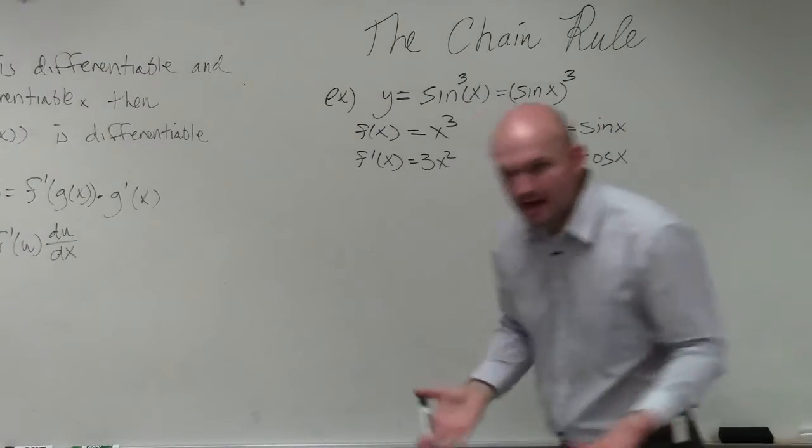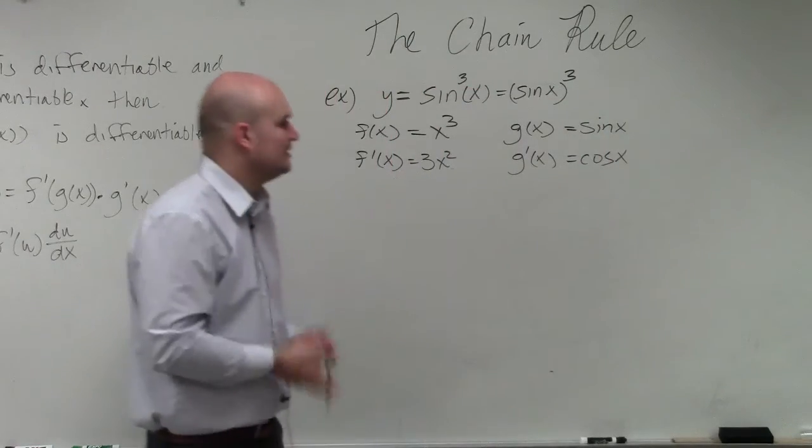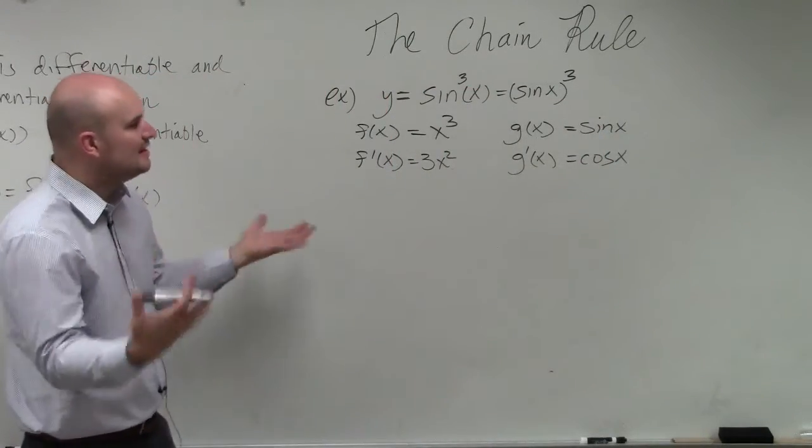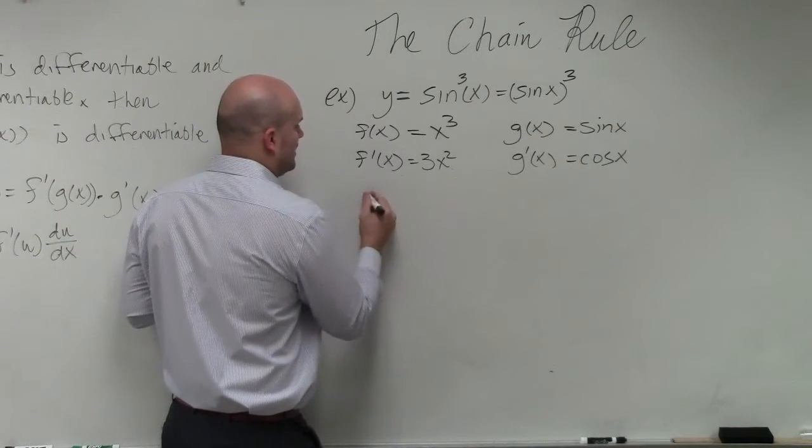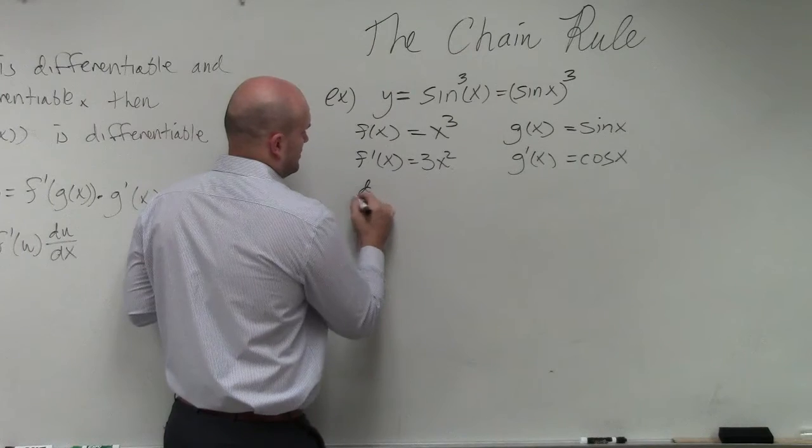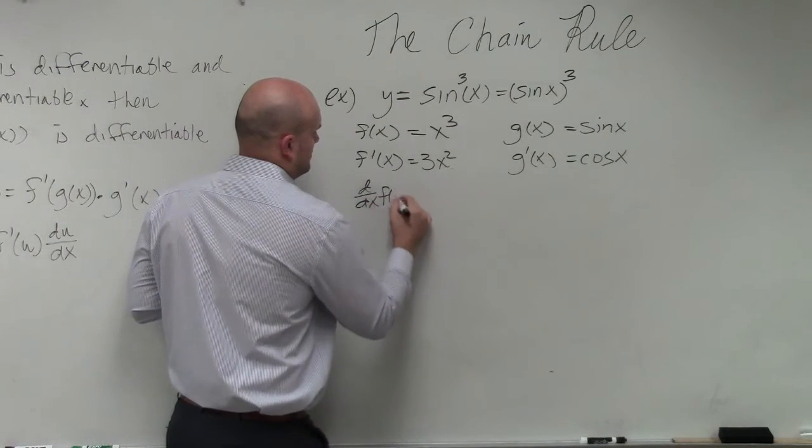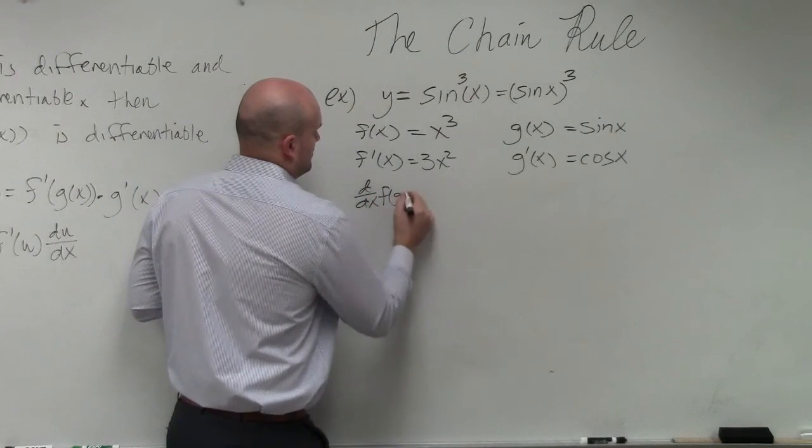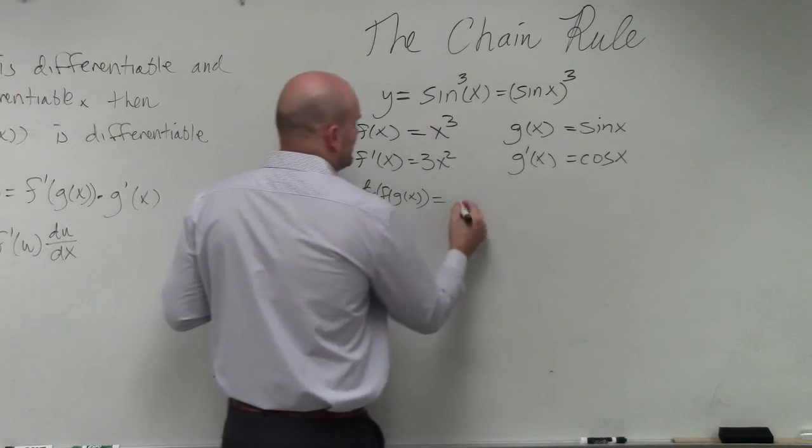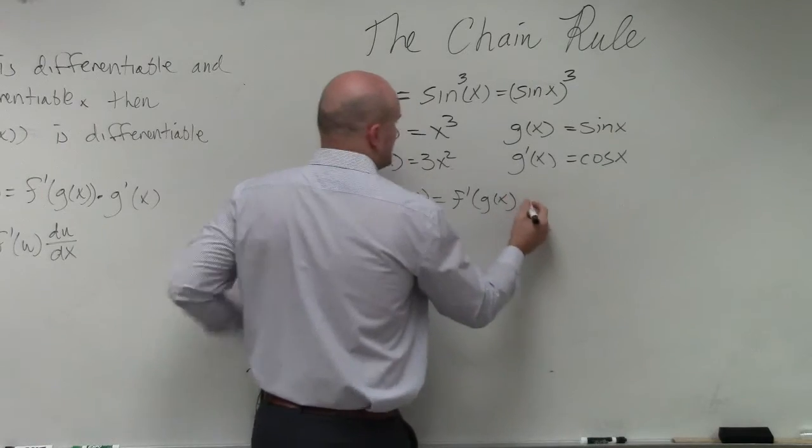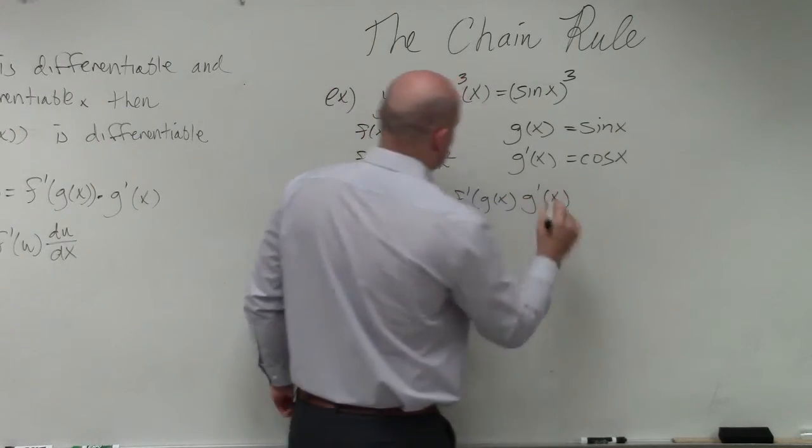So again, we're just finding all the elements that we're going to use. And then the more and more we do these, the quicker you'll be able to do this. So the chain rule simply says f prime of g of x times g prime of x.